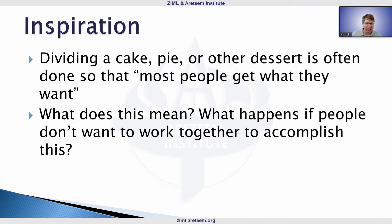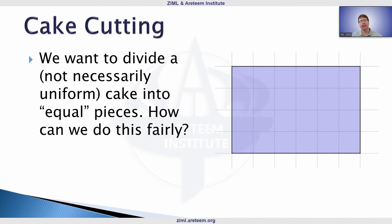The more general question is: what if everyone doesn't want to work together? What if everyone's goal is to get the most of the cake? And you can start to see this might mean they want the most money, the most land, the most goods in economic terms. It helps to look at the simple example of cake cutting, which maps onto many other scenarios.